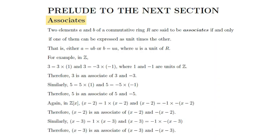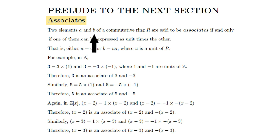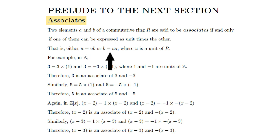Before moving on to the next section, here's a quick look at the associates of a ring. Two elements A and B of a commutative ring R are said to be associates if and only if one can be expressed as a unit times the other.